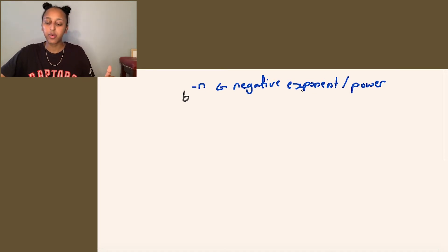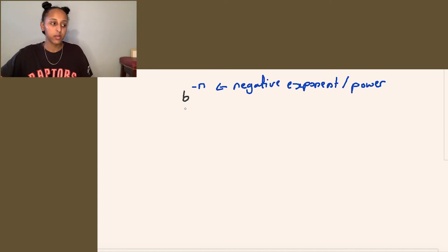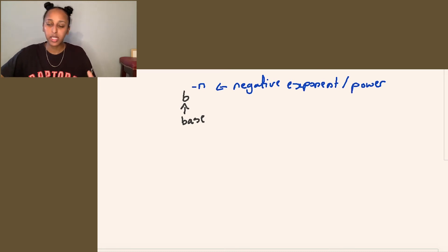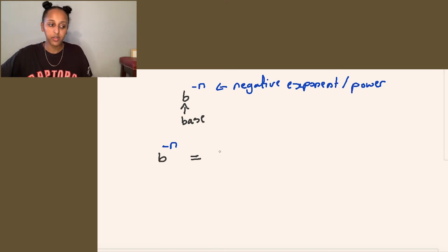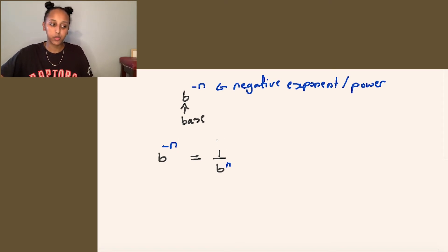If you want to understand what we mean by an exponent or power, you can take a look at my video on introduction to exponents. Here, b represents the base. There's absolutely nothing wrong with negative exponents — we just like to switch them to positive because it's easier to work with. So when you have b to the power of negative n, that is the same as writing one over b to the power of n, changing negative n to a positive n.